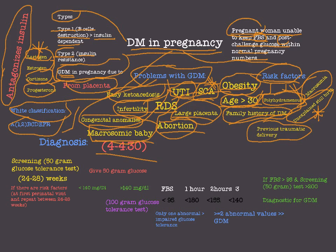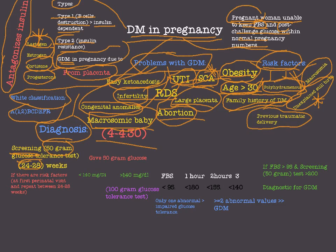To diagnose gestational DM we always start with a screening test called the 50-gram glucose tolerance test. This is performed between 24 and 28 weeks of gestation. However, if risk factors are present, the test is done at the first prenatal visit and then repeated between 24 and 28 weeks.